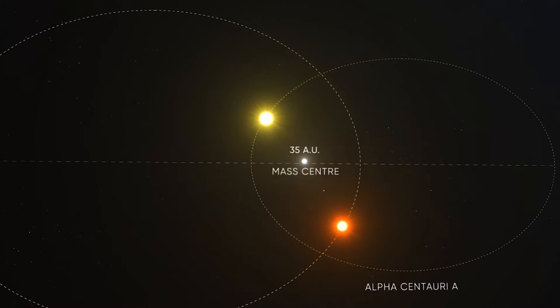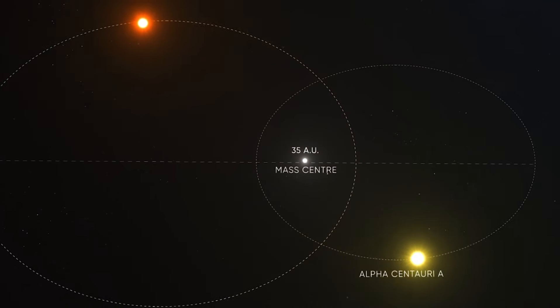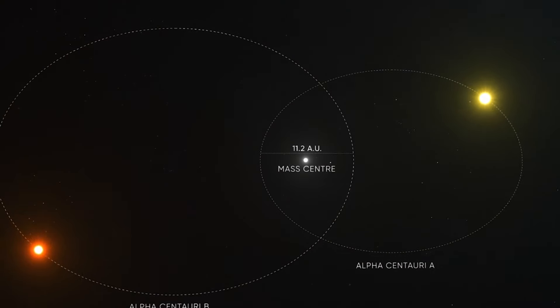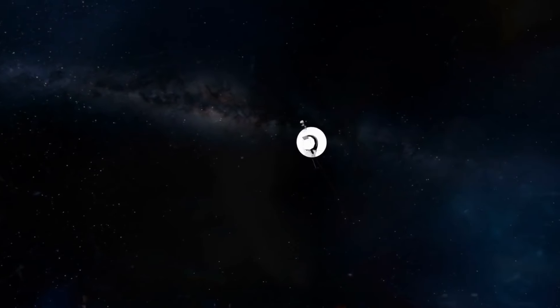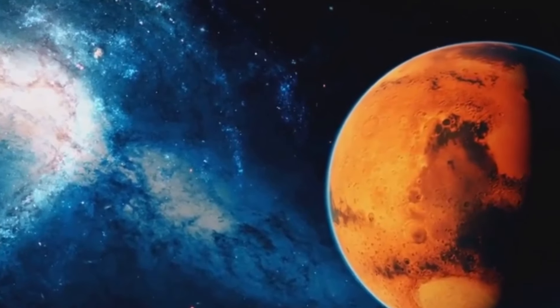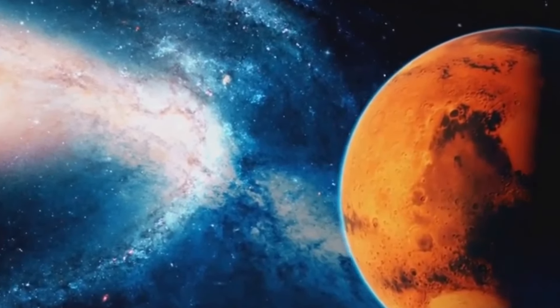Before you start thinking of Proxima Centauri as a fiery ball of fury, remember, we are comparing apples and oranges here. Our sun is not a red dwarf. In fact, compared to other red dwarfs, Proxima Centauri is considered to have a low activity level. Unlike the sun which scientists estimate will only burn through 10% of its hydrogen supply before burning out, Proxima Centauri is predicted to use up almost all its fuel before leaving the main sequence in about 4 trillion years.